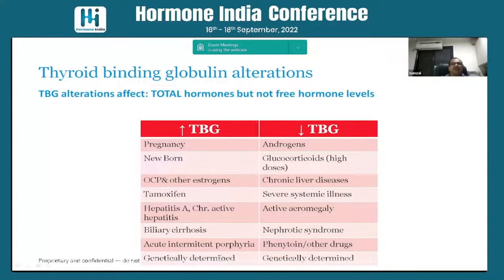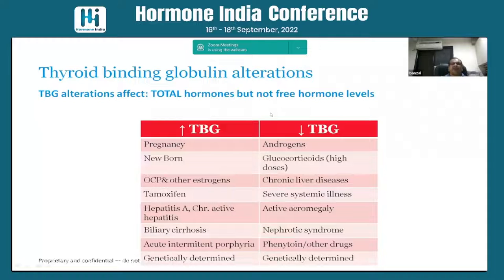Decreased TBG — giving low total T3/T4 — is seen with androgens, steroids, chronic liver disease, systemic illnesses, active acromegaly, nephrotic syndrome, drugs like phenytoin, and genetic causes. In these cases you may have alteration in total T3/T4, but free hormones will be normal. So always assess free T4 alongside total hormones when TBG alterations are suspected.